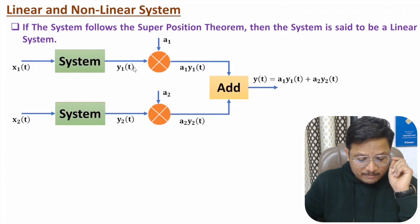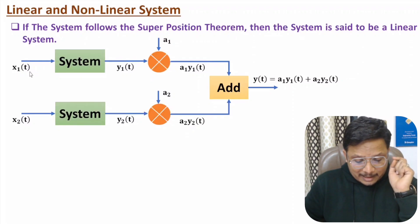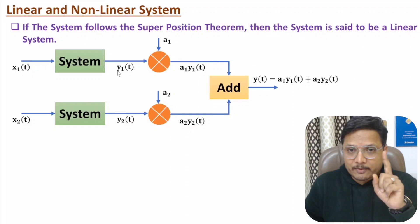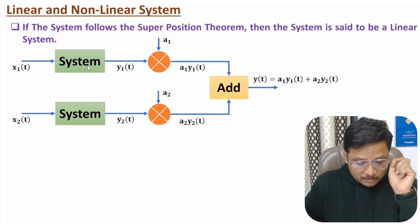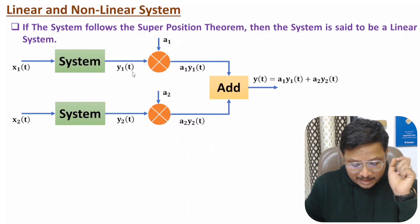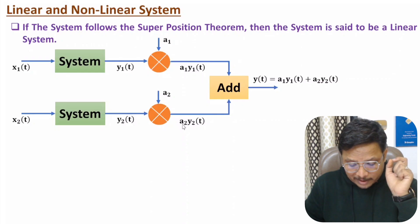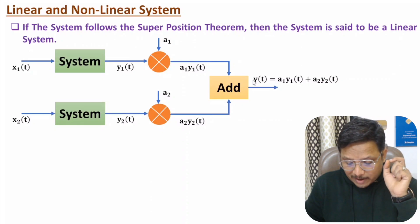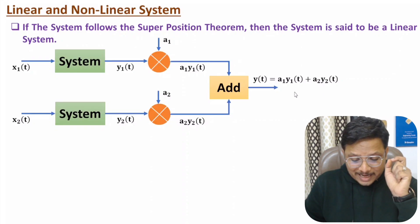For example, here we have a system. If you give input x1(t), it produces output y1(t). If you give input x2(t), it produces output y2(t). After multiplying constants a1 and a2 to y1(t) and y2(t), the resultant output y(t) is a1·y1(t) + a2·y2(t). Now to check linearity, we need to provide a second combination.